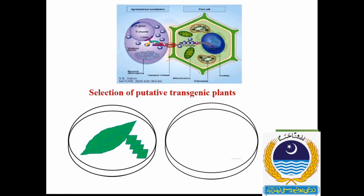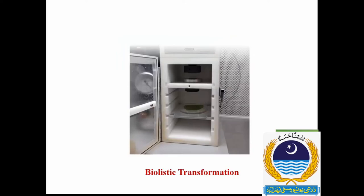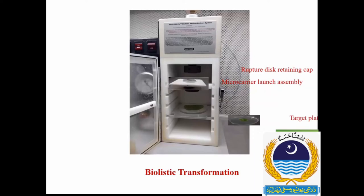For ballistic transformation, the gold particles are coated with the gene of interest. The gun assembly is set and then the explant is bombarded. After that, the bombarded cells are cultured on the selective medium where only the transformed cells are able to survive.